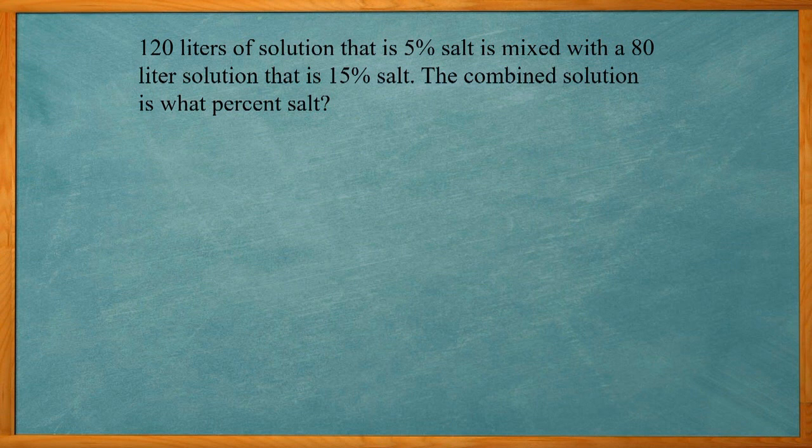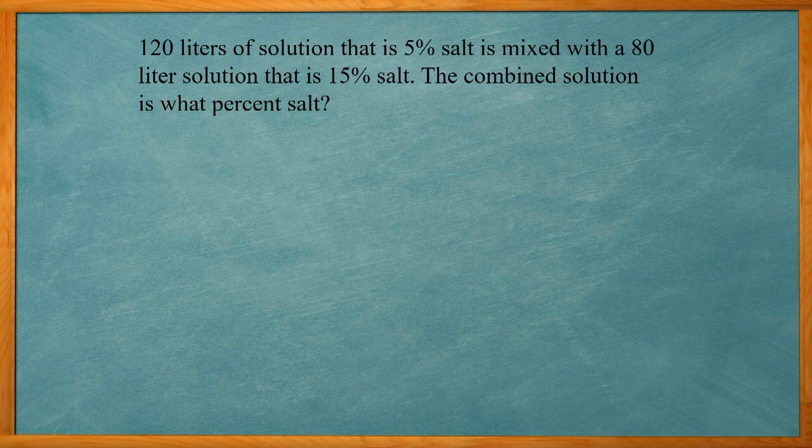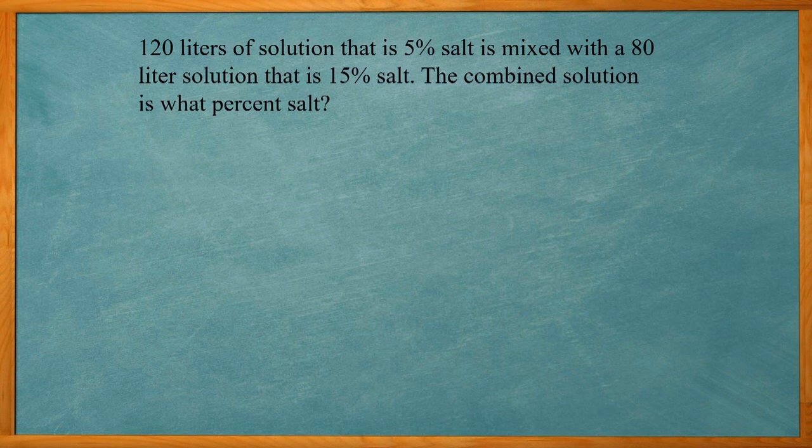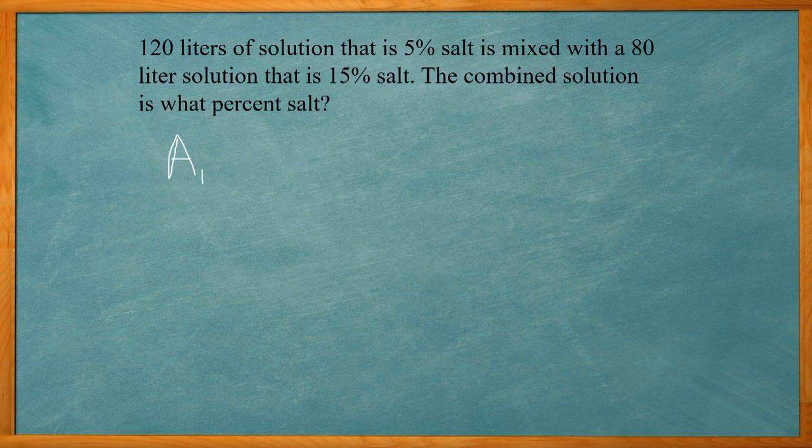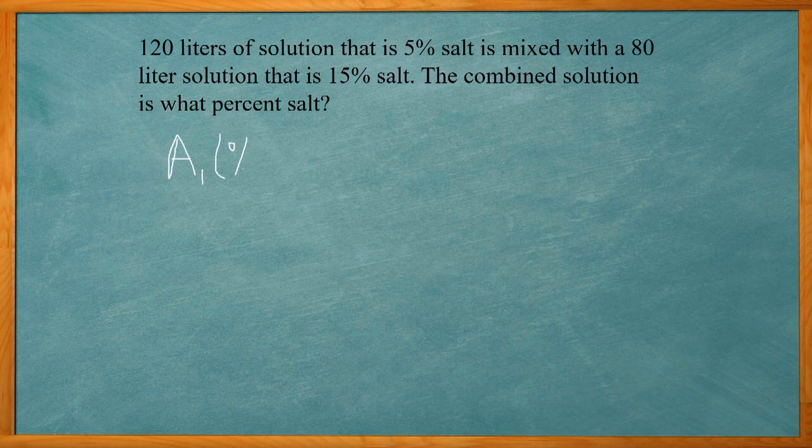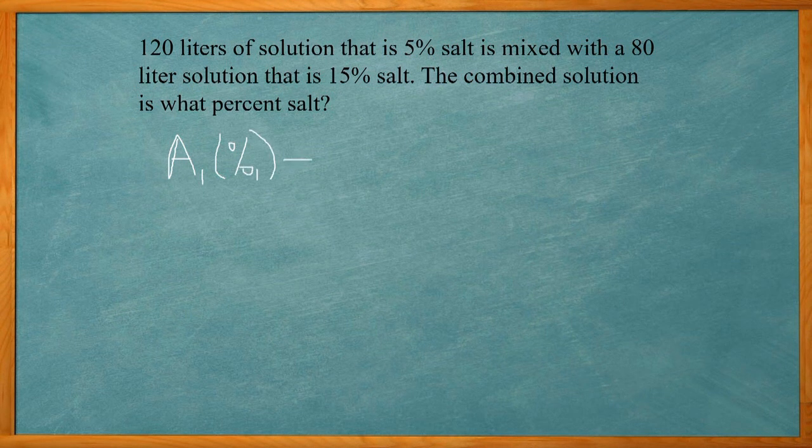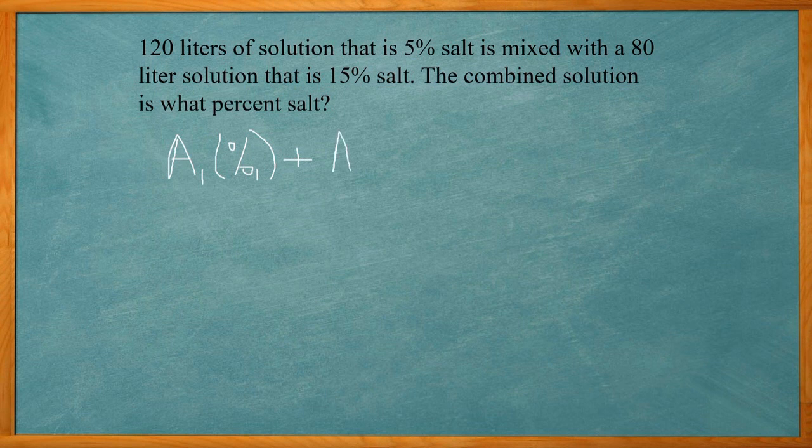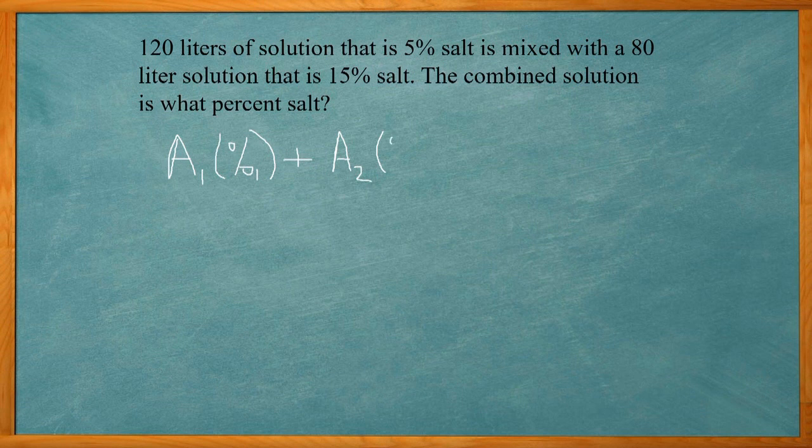So first let me give you a general equation that we're going to use to solve a problem like this. So here we're going to have A which is the amount of solution 1 times the percent salt of solution 1. We're going to add that with the amount of solution 2 times the percent of solution 2.